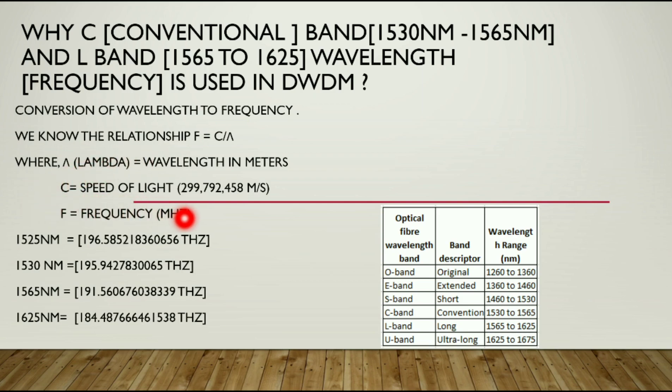By choosing the desired unit of frequency and speed of light we will get the desired value. We have calculated the frequency in terahertz for 1525 nanometers, 1530, 1565, and 1625 nanometers.